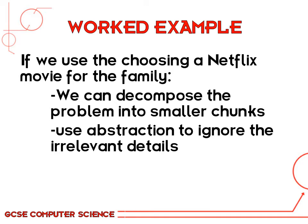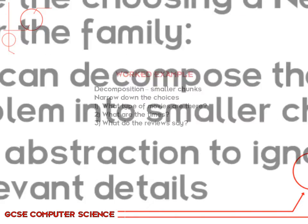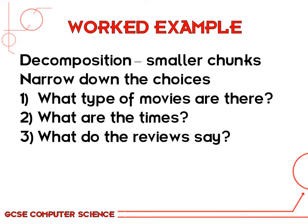Using examples to explain the particular types of computational thinking will make it much easier to understand. So if we use the Netflix example, but specifically for watching a family movie: first, we could decompose the problem into smaller chunks that we can look at individually, and secondly we can use abstraction to ignore all the irrelevant details we don't need to know. Starting with decomposition — breaking it down into smaller chunks — we want to narrow down the choices on Netflix, because there are loads to choose from.